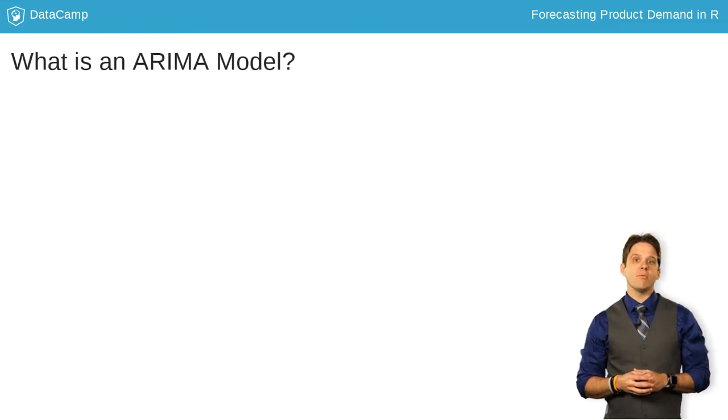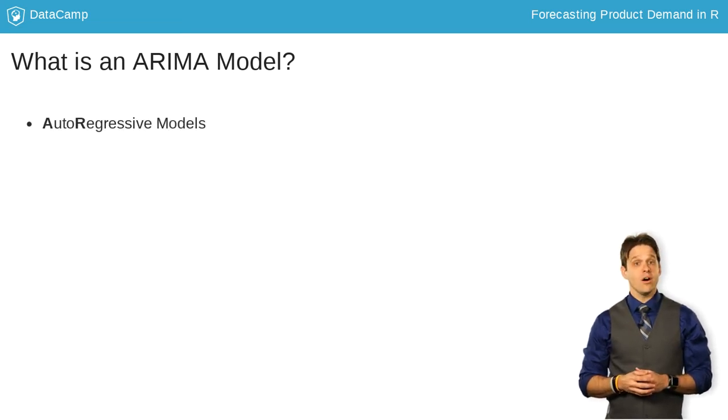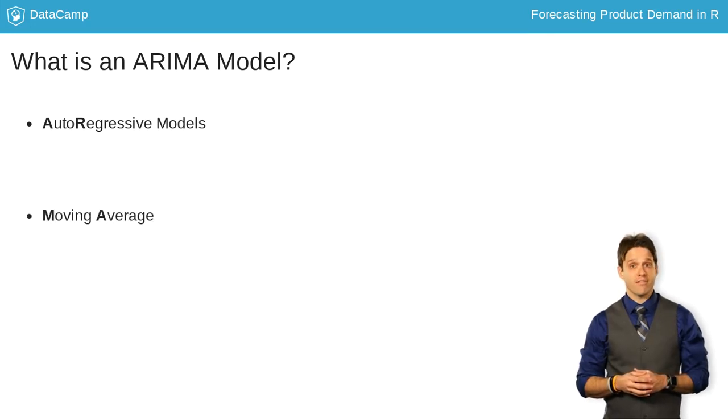Let's quickly break down what we mean when we say ARIMA modeling. AR stands for autoregressive, MA stands for moving average, and I stands for integrated.